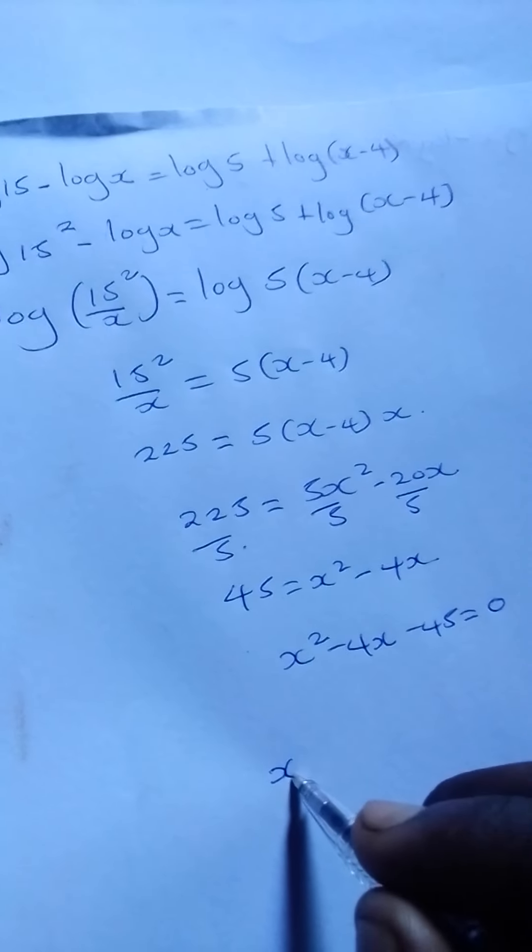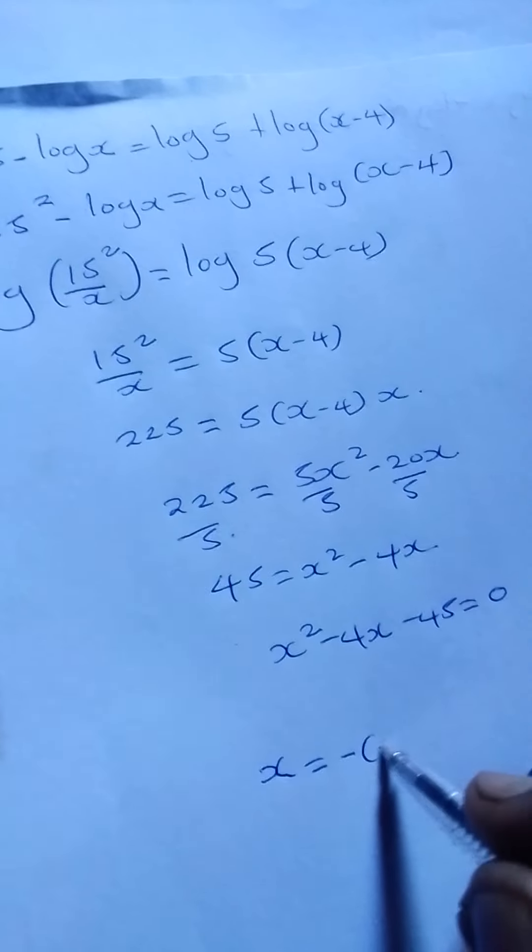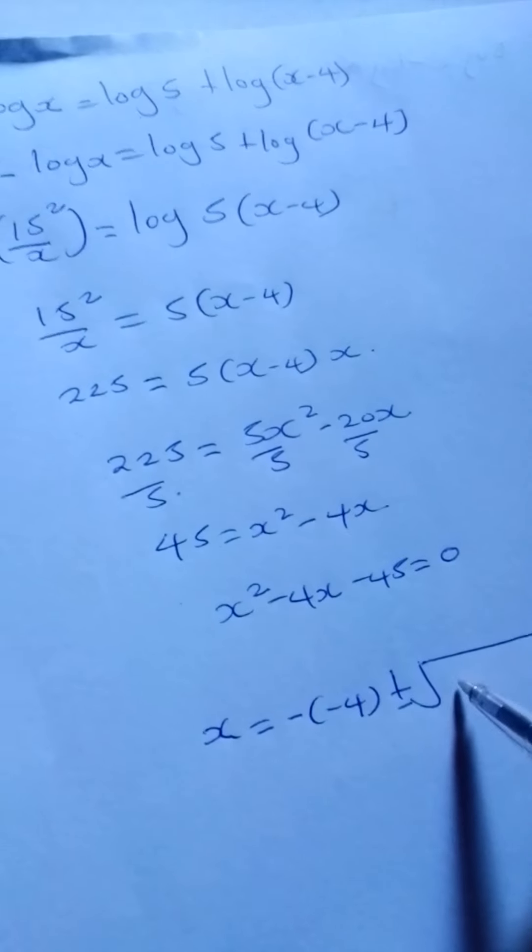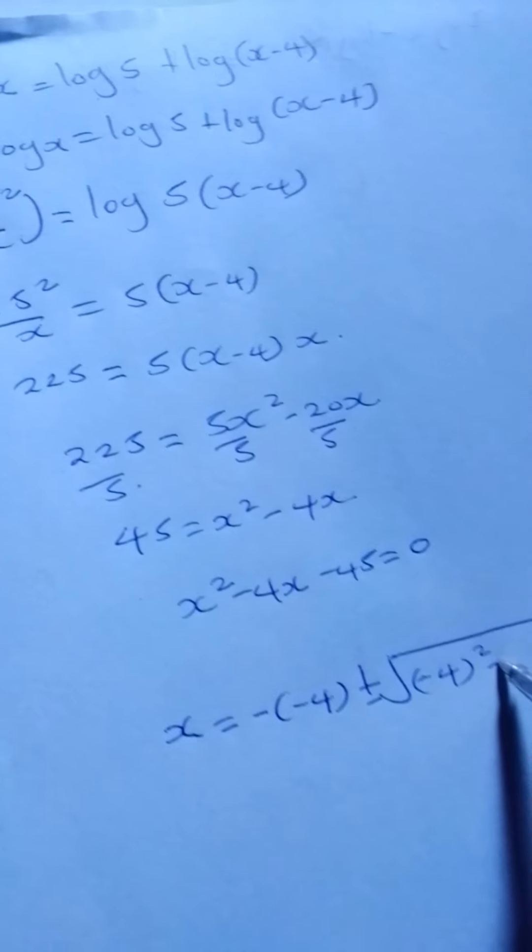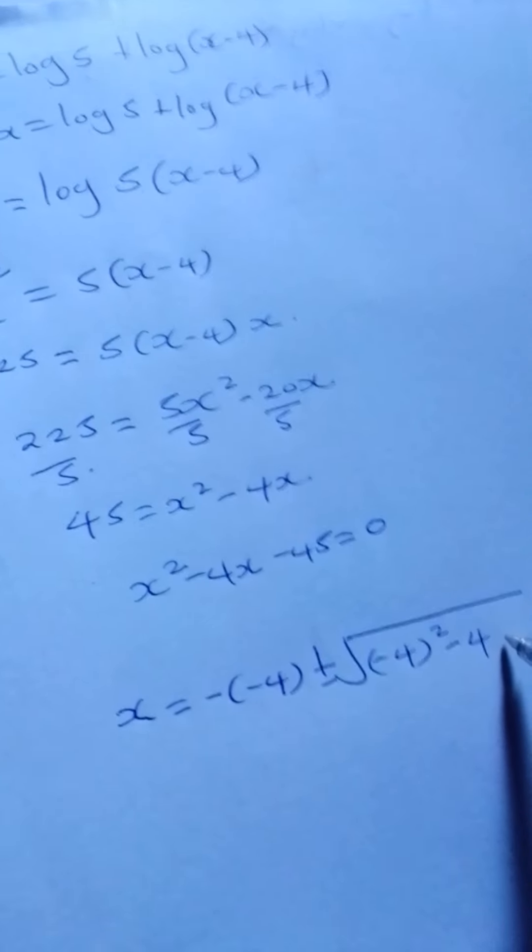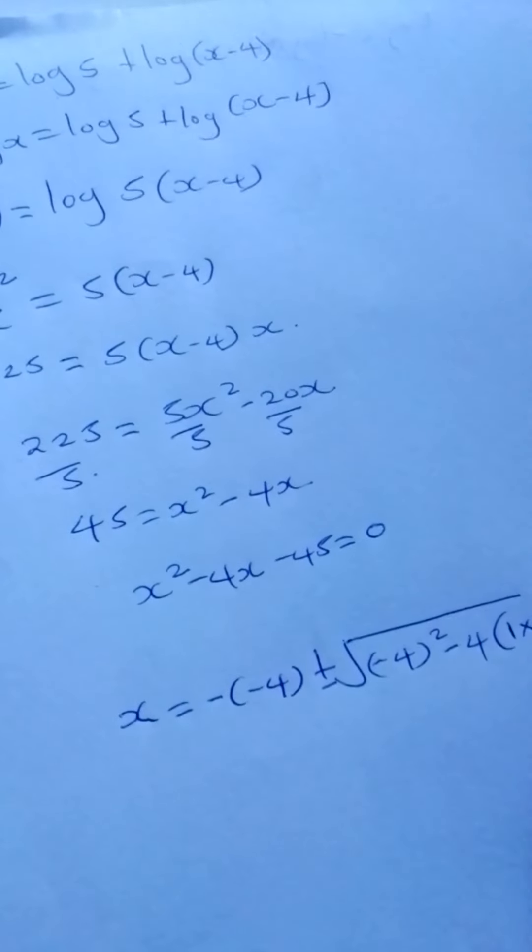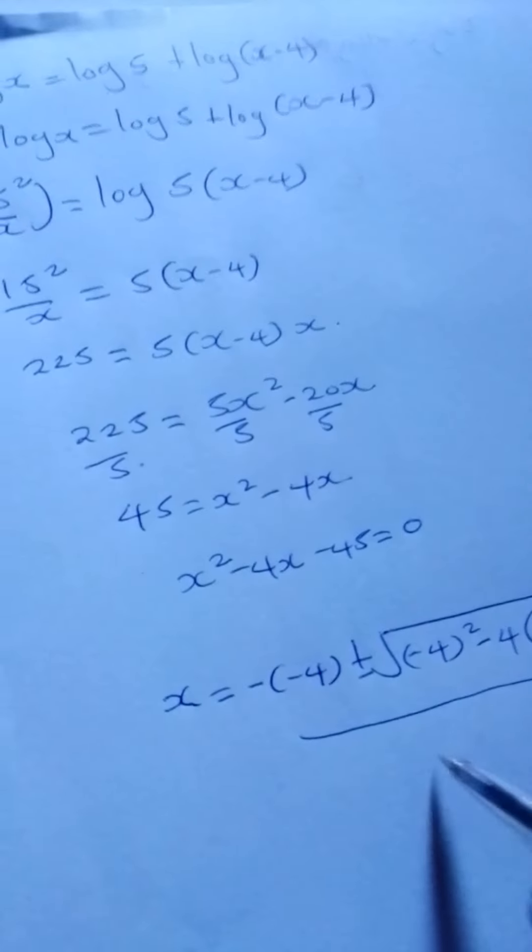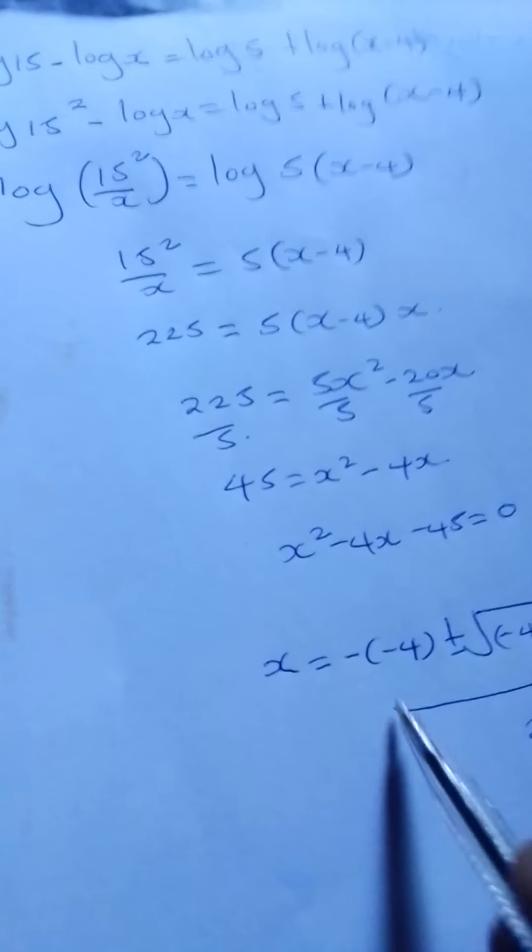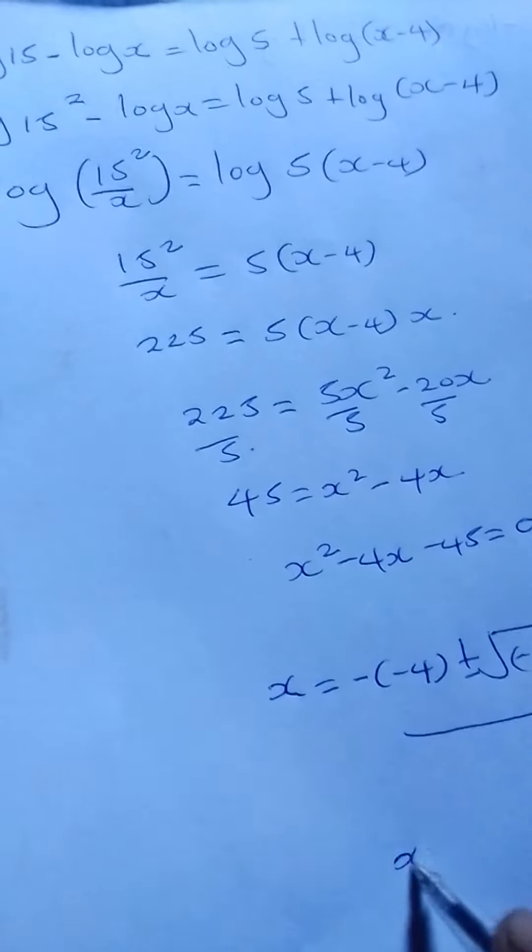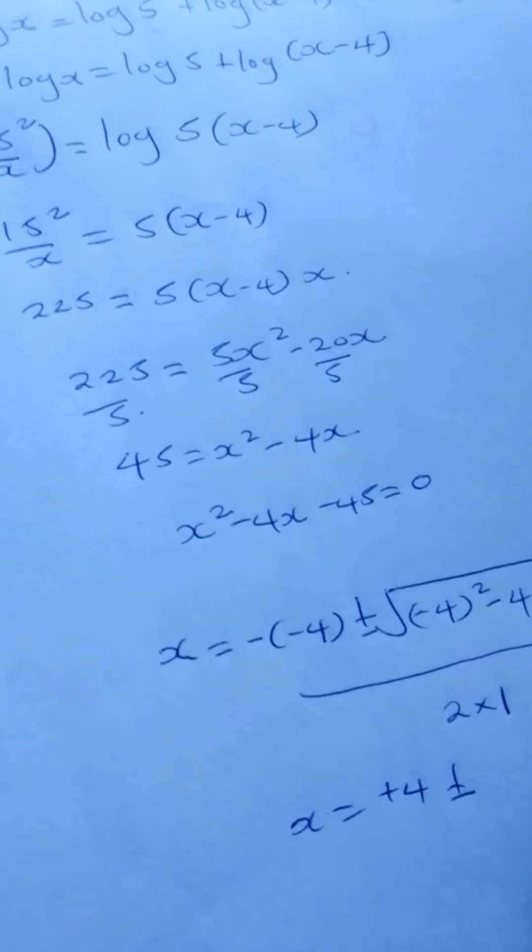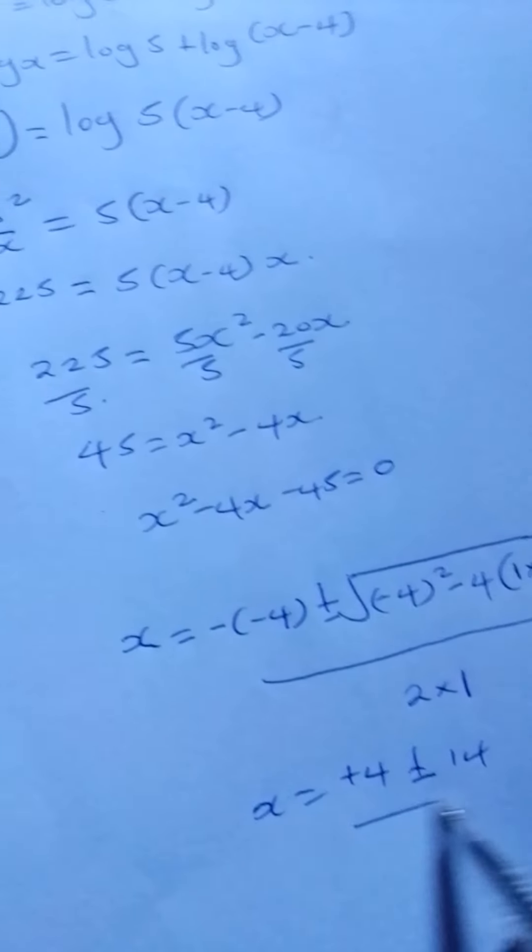Using the quadratic formula: x = [-(-4) ± √((-4)² - 4(1)(-45))] / 2(1). This simplifies to x = (4 ± √196) / 2, which is (4 ± 14) / 2.